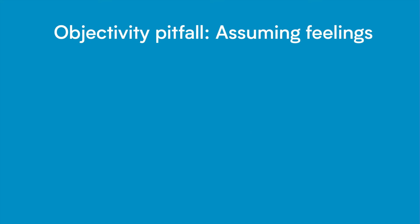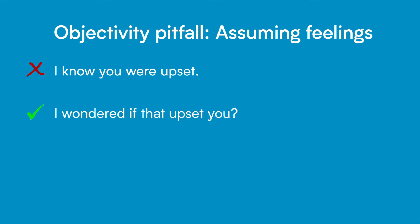Finally, the fifth pitfall is to assume someone else's feelings. Never assume how someone is feeling, no matter how sure you are or how obvious you think it is that they're feeling a certain way. Sometimes you might want to ask if someone felt a certain way or communicate that someone gave you the impression of having a feeling, in order to open up a discussion. Make sure you emphasize that this is only a guess and be very clear that you're inviting further discussion. For example, you don't want to say 'I know you were upset,' but you could say 'I wondered if that upset you.'